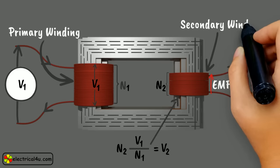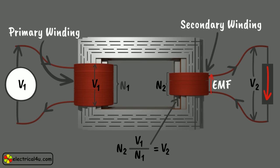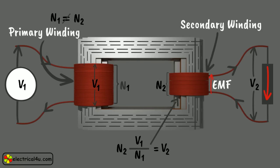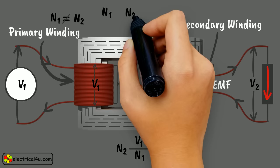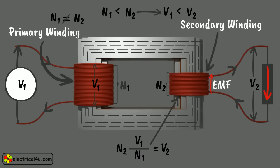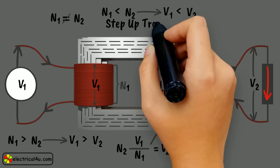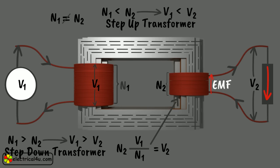If the number of turns of the secondary winding is not equal to that of the primary winding — that is, if N2 is not equal to N1 — then the secondary voltage of the transformer is different from the primary voltage. If N2 is greater than N1, the secondary voltage will be more than the primary voltage. On the other hand, if N2 is less than N1, the secondary voltage is less than the primary voltage. The former is called a step-up transformer and the latter is called a step-down transformer. This is the most basic theory of a transformer.